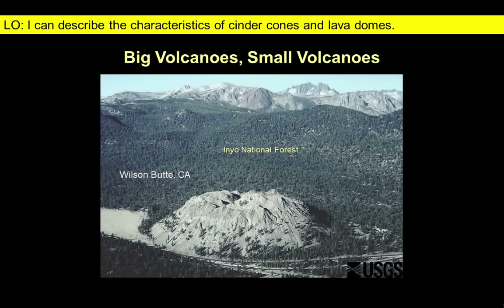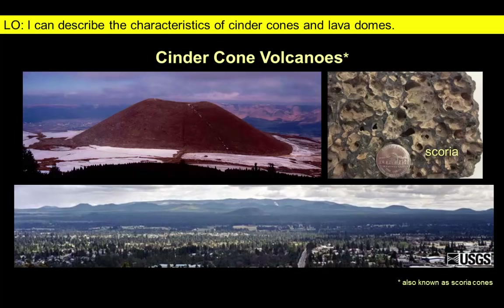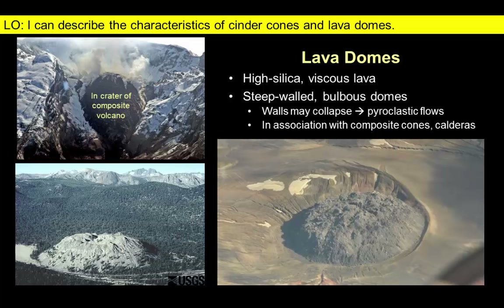These small cones can be found on their own or on the flanks of larger volcanoes and are typically formed by a single eruption. They are composed of smaller pieces of tephra produced when lava is blasted into the air and cools as it falls to ground. The cooled lava fragments often contain air bubbles and are known as scoria. Lava domes form when the most viscous lava oozes out to the surface and slowly crawls along and cools to form steep-walled bulbous domes.